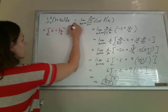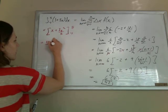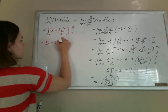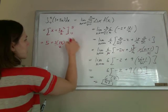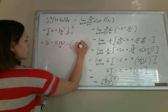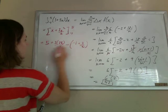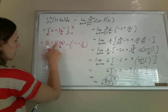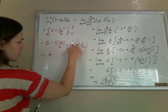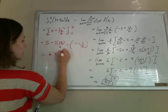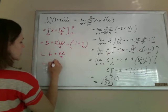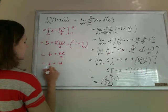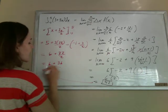Evaluate that from negative 1 to 5. Plugging in the 5, I get 5 plus 3 times 25 over 2. Plugging in the negative 1, I get negative 1 plus 3 over 2. Now, 5 minus negative 1 is 6. 75 halves minus 3 halves is 72 halves. So, 6 plus 36 is indeed 42, which matches that.